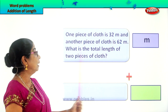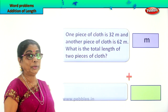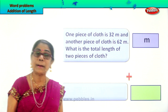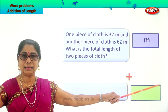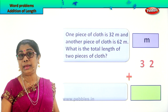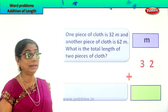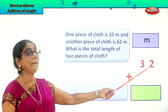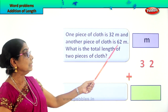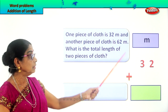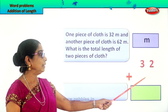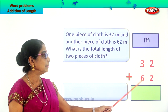We are going to a cloth store with mommy, and mommy is going to buy some cloth to make nice dresses for you. One piece of cloth is 32 meters and the other piece of cloth is 62 meters. That's the length. Your question is: find the total length of two pieces of cloth. At the cloth store they measured 32 meters — so it's a big roll of material. We write 32 meters, and the second piece of cloth is 62 meters, so we write plus 62 meters.